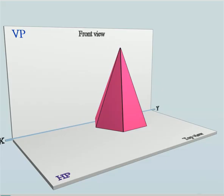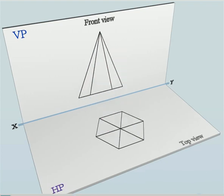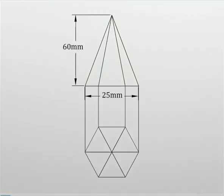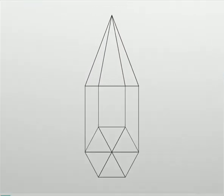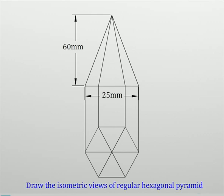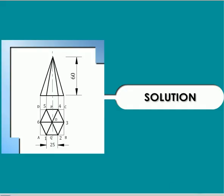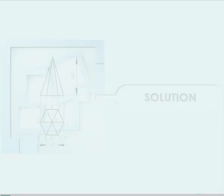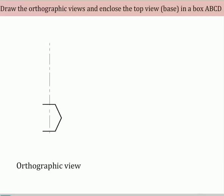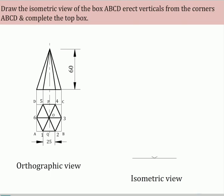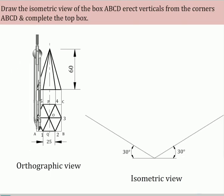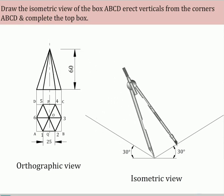Example problem. In this problem, the task is to draw the isometric view of a regular hexagonal prism of base side 25 mm and axis height 60 mm. The video provides the isometric view of the prism and also the orthographic views. Draw the orthographic views of the solid and enclose the top view in a box ABCD. Draw the isometric view of the box ABCD, erect verticals from the corners ABCD, and complete the top box.